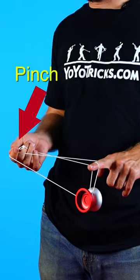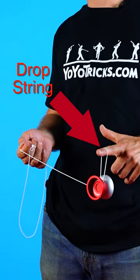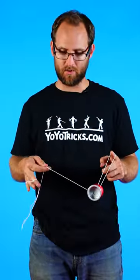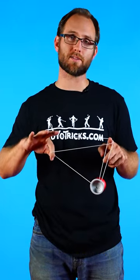Once you're in a Houdini mount you're going to pinch the string with your yoyo hand and drop the string off your thumb which will leave the slack at the bottom. You can then take that slack and swing it around your opposite hand index finger.